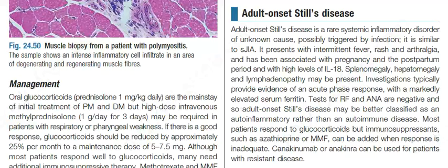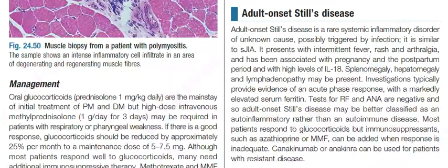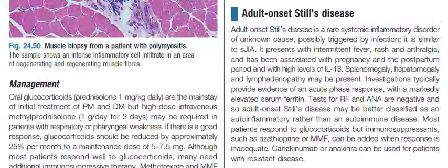Investigations typically provide evidence of an acute phase response with a markedly elevated serum ferritin. Tests for rheumatoid factor and ANA are negative, and so adult onset Still's disease may be better classified as an auto-inflammatory rather than an autoimmune disease.